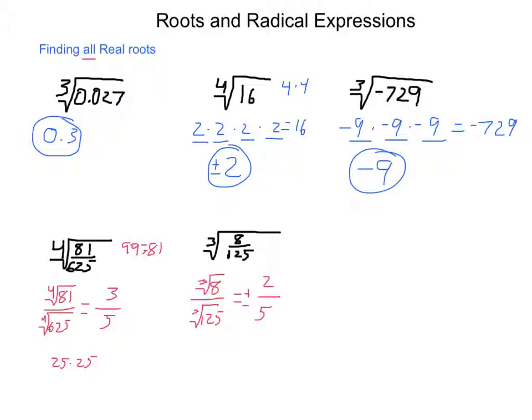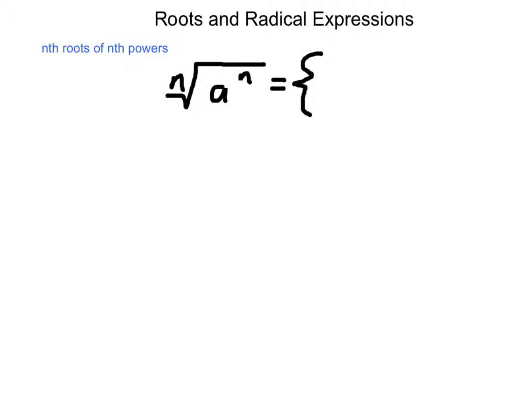Remember: when you take even roots, it's going to be a positive or negative result. When you take odd roots, it's the sign of whatever was inside the radicand. There are some rules that go along with this, and the nth root of nth powers comes into two situations as well.